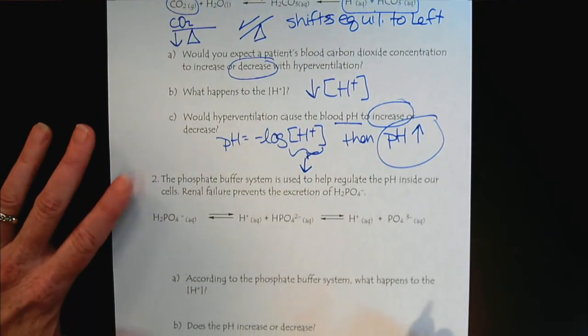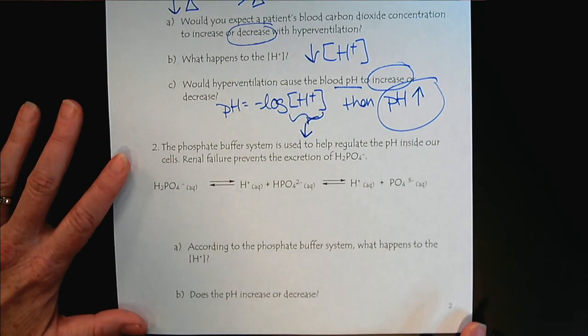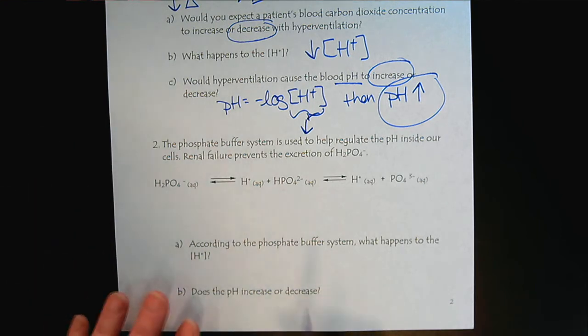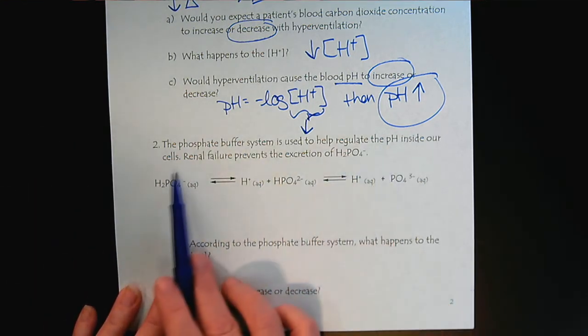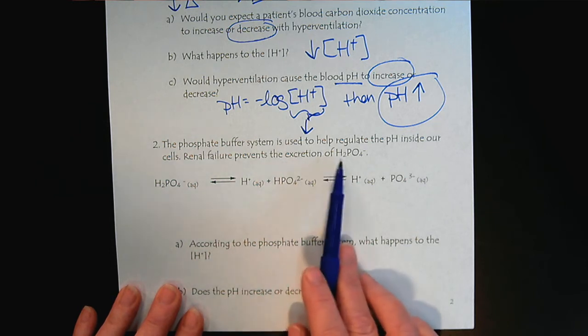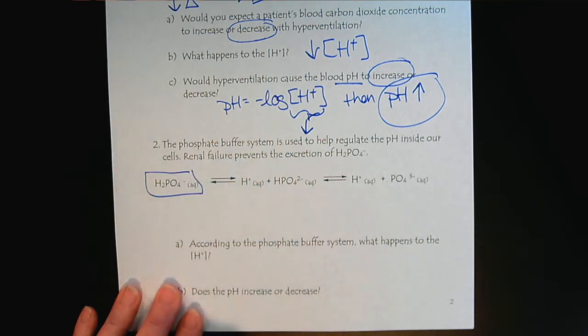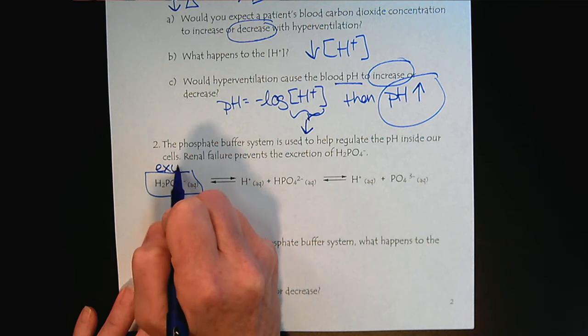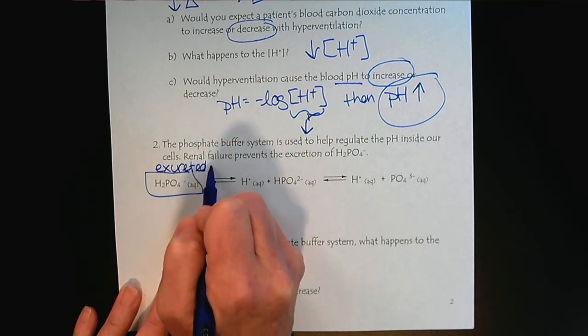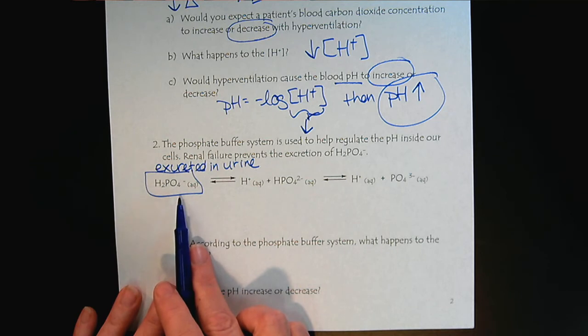Now let's look at the phosphate buffer system that we were introduced to in the earlier equilibrium tutorial. In this phosphate buffer system, this helps to regulate the pH inside our cells. So if somebody has renal failure, they are not able to excrete the dihydrogen phosphate. Normally, the dihydrogen phosphate is excreted in our urine. But if we're not able to urinate, what's going to happen?